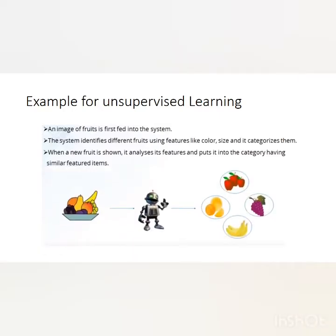Since clustering is classified as unsupervised learning, here we have an example. An image of fruits is fed into the system, then the system identifies the different fruits using their features like color and size, and categorizes them. When a new fruit is shown, the system analyzes it and puts it into the category having similar feature items. This is generally called unsupervised learning, also called learning by observations rather than learning by examples. So we can easily say clustering is a type of unsupervised learning method.